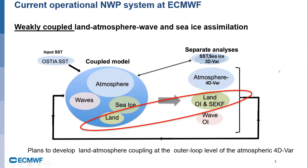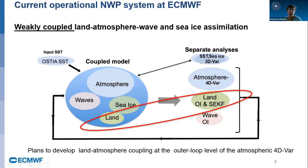Currently, we use a weakly coupled land-atmosphere approach — I circle it in red because we focus on land-atmosphere today. Weakly coupled because we use a coupled first-guess model. We use a coupled land-atmosphere model, and we are running data assimilation separately for the different components.